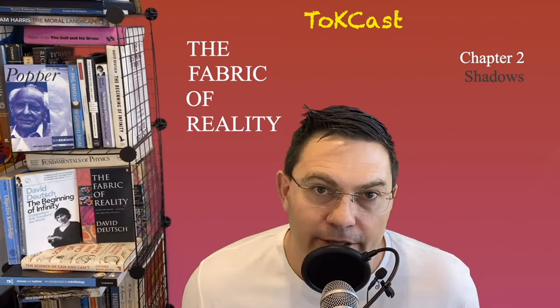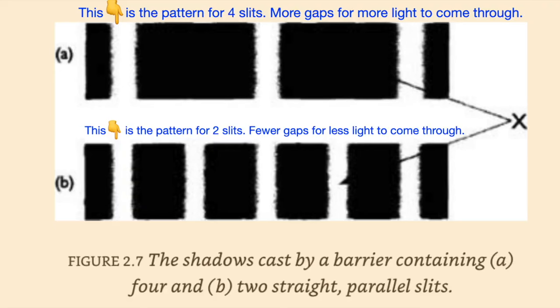Okay, so backtracking a little bit and reading on. David wrote: These places were bright when there were two slits in the barrier, but went dark when we cut a second pair of slits for the light to pass through. Opening those slits has interfered with the light that was previously arriving at X. So adding two more light sources darkens the point at X. Removing them illuminates it again.